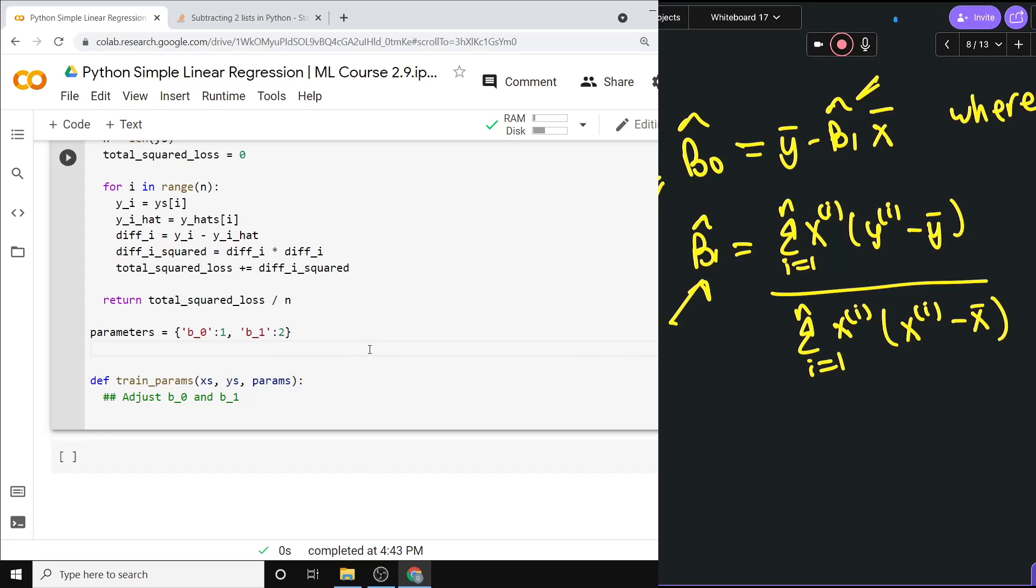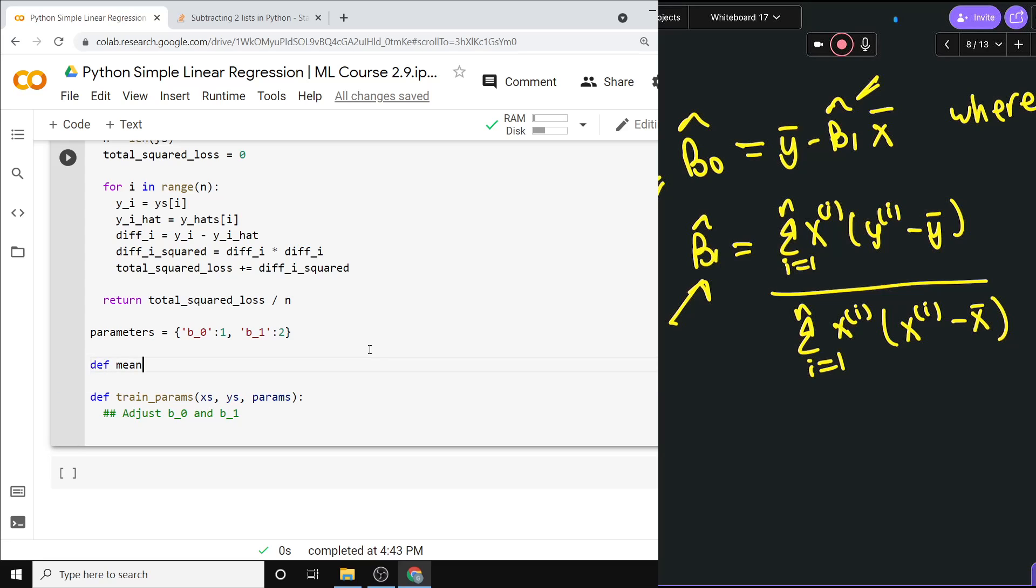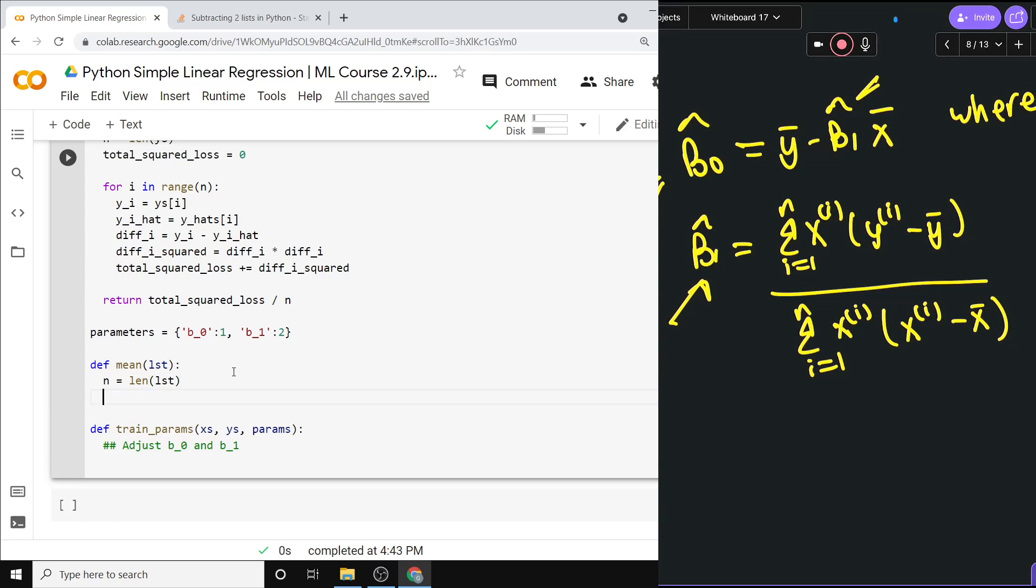To calculate an average I will just make what we call a helper function. Define mean of just a list of numbers. We could call it x's but that's kind of confusing, so let me just say 'list.' The mean of a list of numbers is quite simple: n is the length of the list, and then the mean is simply the sum of the list divided by the number of things that are in there.